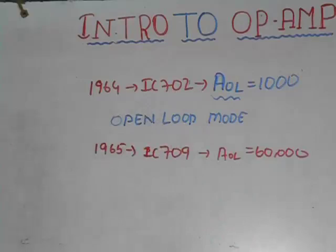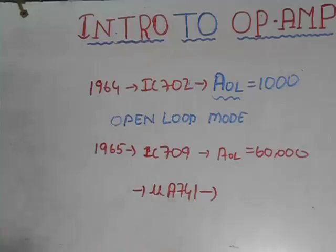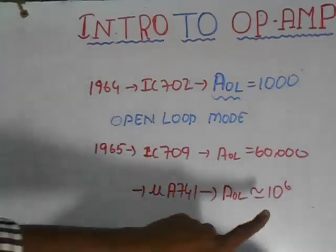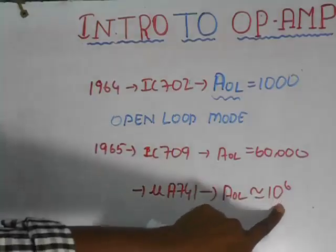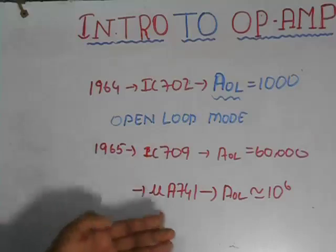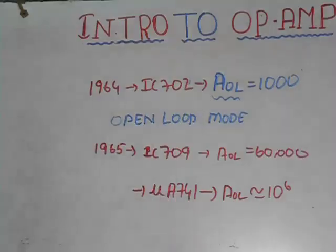So in the next year, Dave Fullager designed the very well-known IC μA741, which we use nowadays, whose AOL is practically equal to 10^6. This is a major achievement in the electronic era and it revolutionized our electronics. The major advantage of this IC is it has a built-in compensation capacitor. This capacitor allows the μA741 to be used without any external circuitry. I will explain compensation and why it is done in future videos.